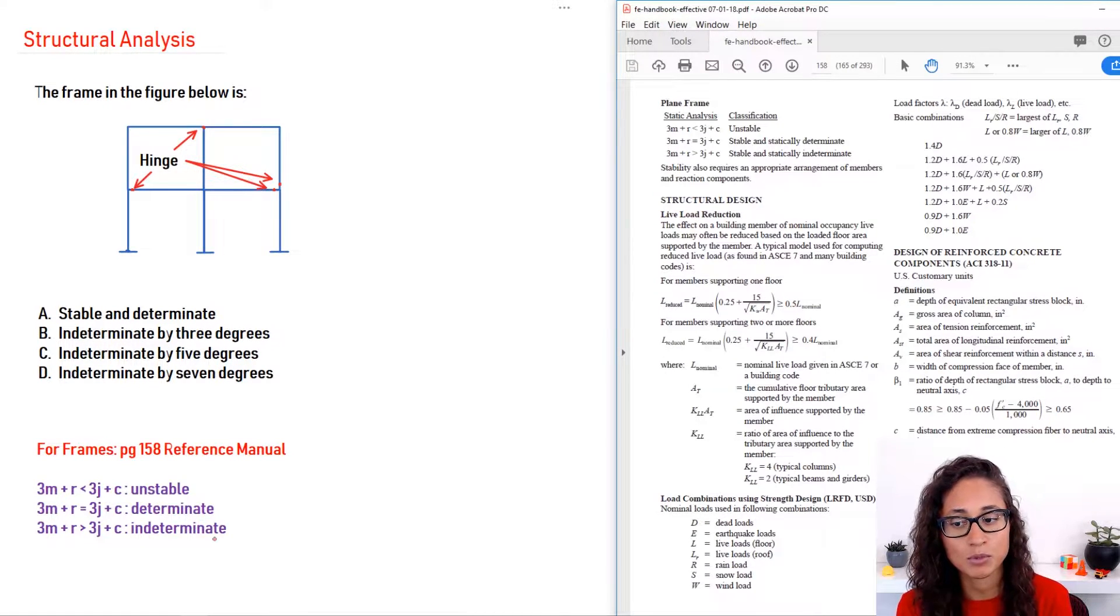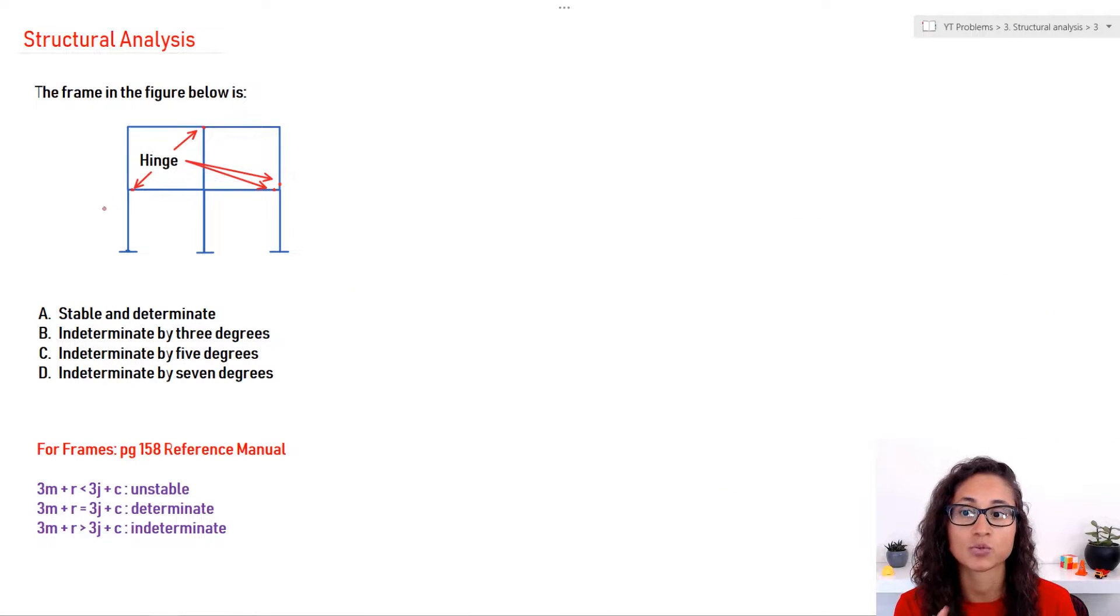Note that the equation is similar to the one that we use for truss, except here we have a c. So the c is for the hinges. Here we are given about three or four hinges. So let's see how we're going to calculate the hinges. That's where this problem can be a little bit tricky.